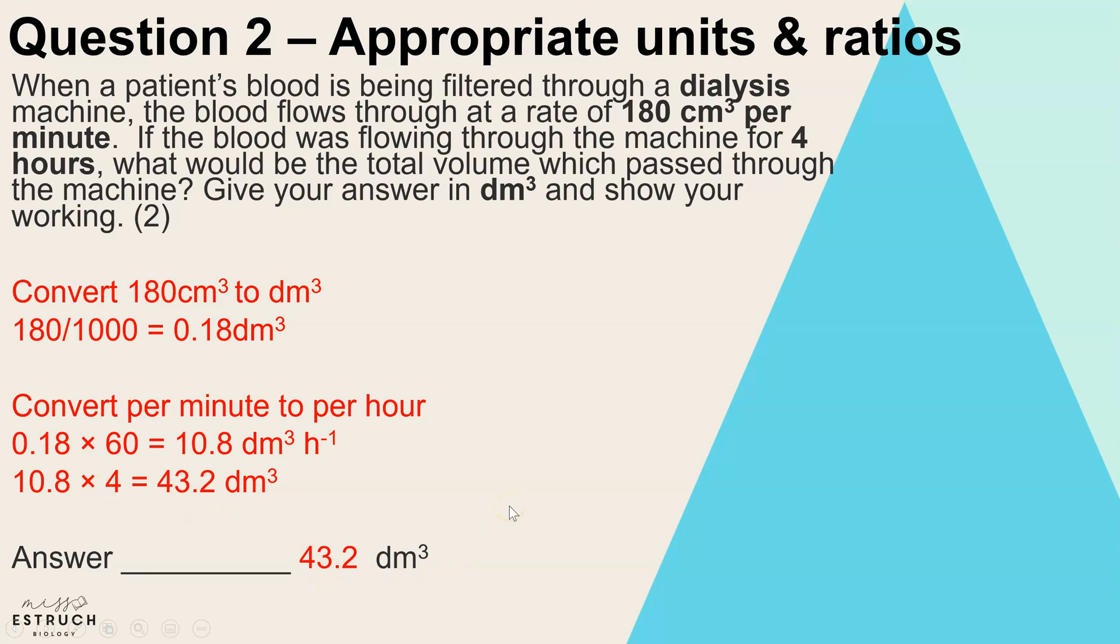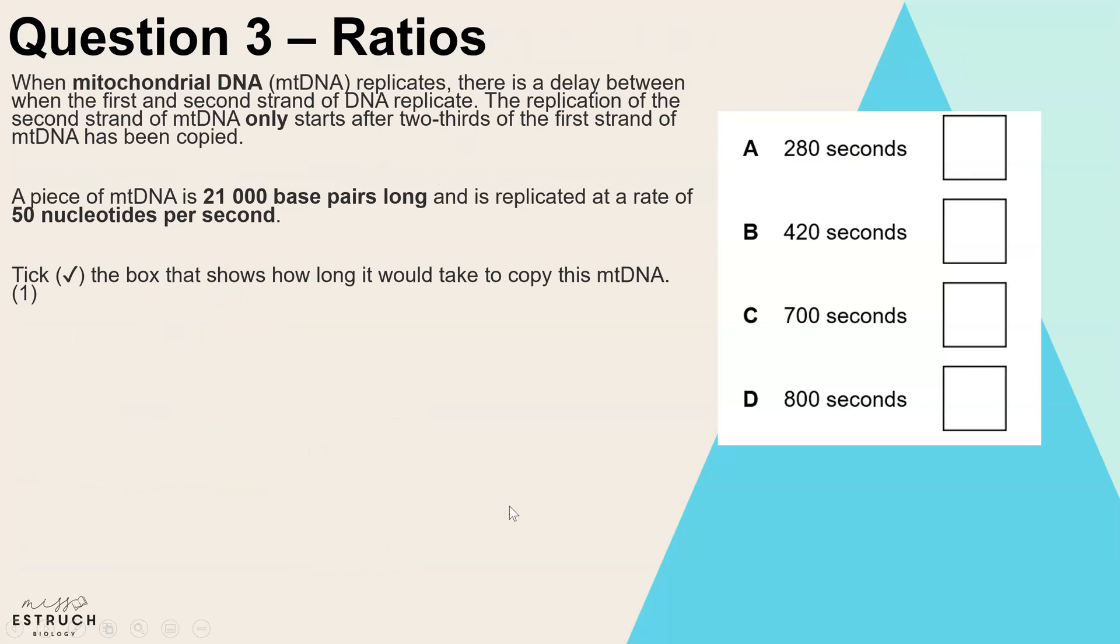Question three on ratios. We've been told that when mitochondrial DNA replicates, there is a delay between when the first and the second strand of DNA actually replicates. The replication of the second strand only starts after two-thirds of the first strand have been copied. We're then told that a piece of this mitochondrial DNA is 21,000 base pairs long and it's replicated at a rate or speed of 50 nucleotides per second. For one mark, you have to tick the box that shows how long it would take to copy this mitochondrial DNA.